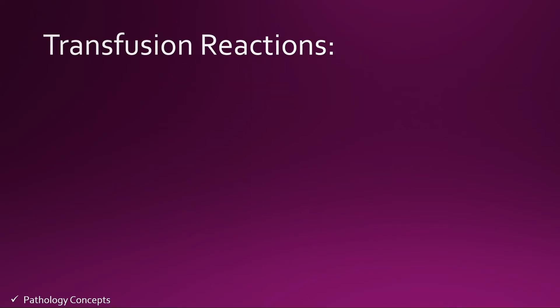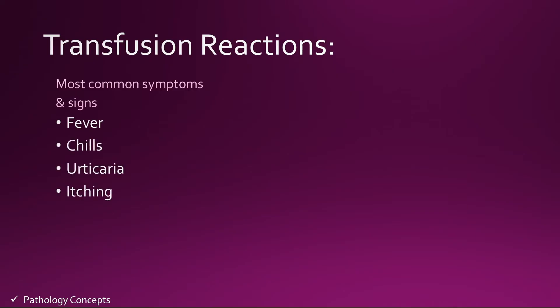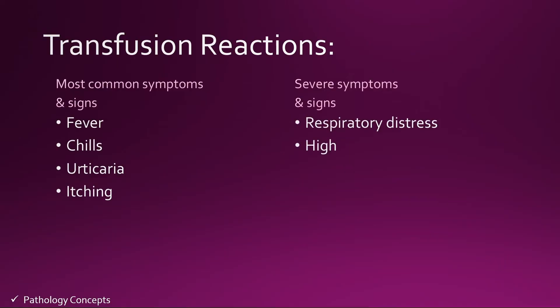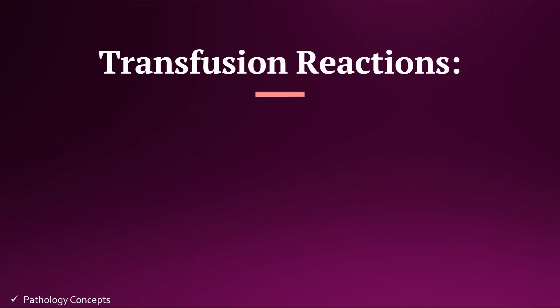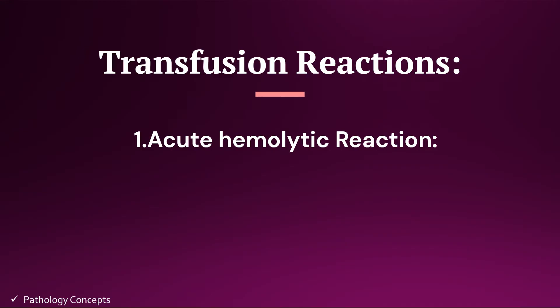Now let's learn about transfusion reactions. The most common symptoms and signs are fever, chills, urticaria, and itching. The severe symptoms and signs are respiratory distress, high fever, hypotension, and red urine. The first type is acute hemolytic transfusion reaction. It can occur due to intravascular or extravascular hemolysis, and it can be immune mediated or non-immune mediated. Immune-mediated acute hemolytic reaction occurs as a result of recipient antibodies reacting to blood donor antigens.